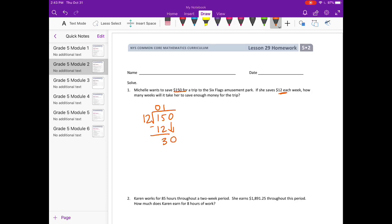12 can go into 30. Let's see. 12 times 2 would be 24. 12 times 3 would be 36, so that's too big. So we can go in twice. We subtract and get 6. So we're going to have 12 remainder 6 weeks, but we can't have a remainder of a week. So she's not going to have enough after 12 weeks. 12 weeks is not enough. So she would need 13 weeks to make enough money for her trip.